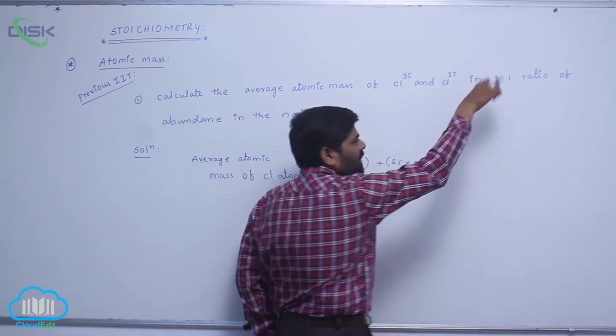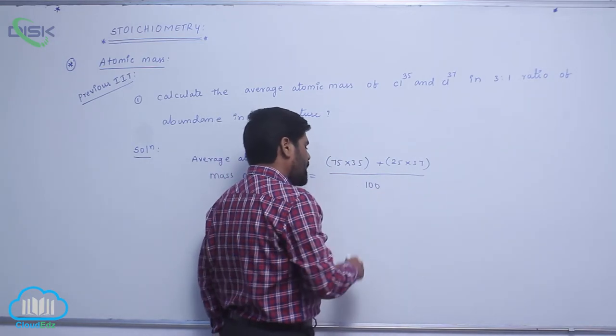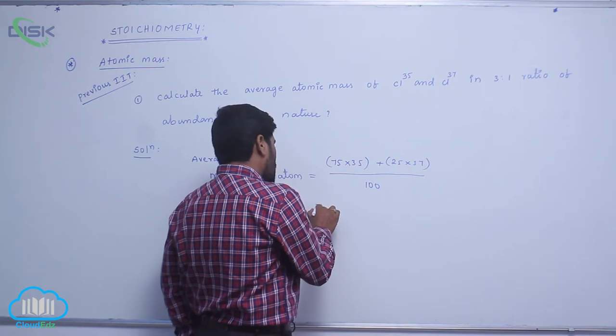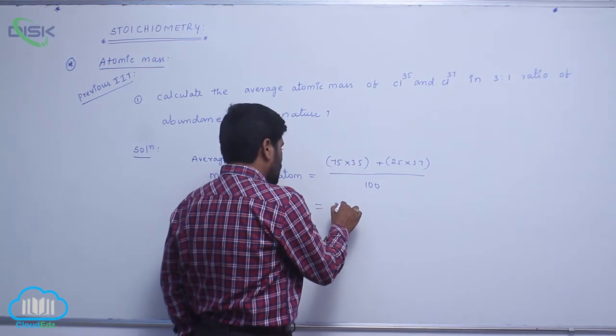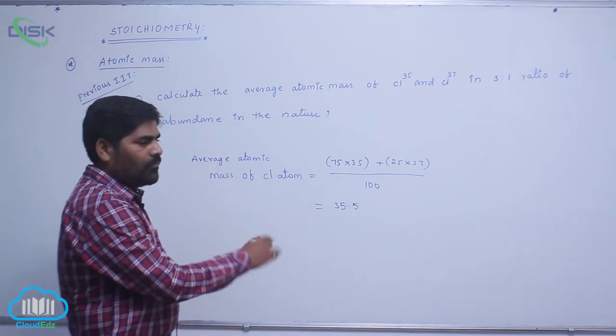The denominator is 100. Therefore, the value is approximately 35.5.